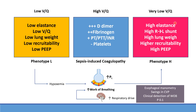On the other side, we have Phenotype H — L stands for low and H stands for high. Once we have bilateral pulmonary infiltrates and lung injury, this is an ARDS-like picture. Those patients will have a very low VQ ratio with right-to-left shunt. Their lung mechanics are abnormal with high elastance and low compliance. Lung weight is high due to consolidation and exudates. Those patients are likely to be recruitable and may require higher PEEP.